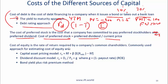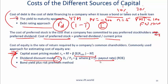Cost of equity is the rate of return required by a company's stockholders. The most commonly used approach is the Capital Asset Pricing Model (CAPM) — a guaranteed exam question. You'll be given the risk-free rate, beta, and the market risk premium. Alternatively, you might use the dividend discount model: in efficient markets, cost of equity = D1/P0 + g, where g (the long-term sustainable growth rate) equals the retention ratio × ROE, and retention ratio equals (1 − payout ratio).